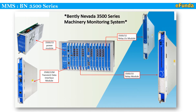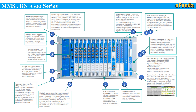Moving on to machine monitoring system — Bentley Nevada 3500 series. One can refer to the picture where the Bentley Nevada 3500 series machine monitoring system is shown with the complete rack. Some of the components include the 3500/15 power supply module, 3500/22M transient data interface module, 3500/32 relay I/O module, and 3500/33 relay module — these are the typical main components of the Bentley Nevada monitoring system.